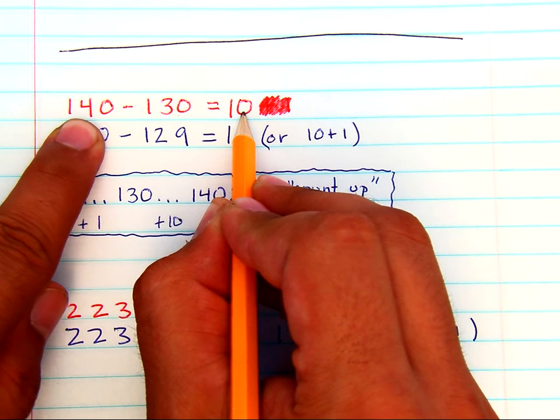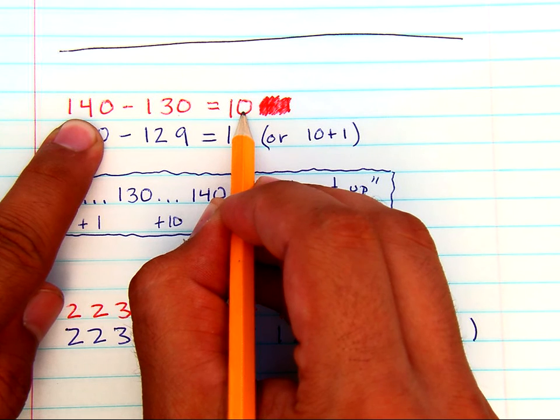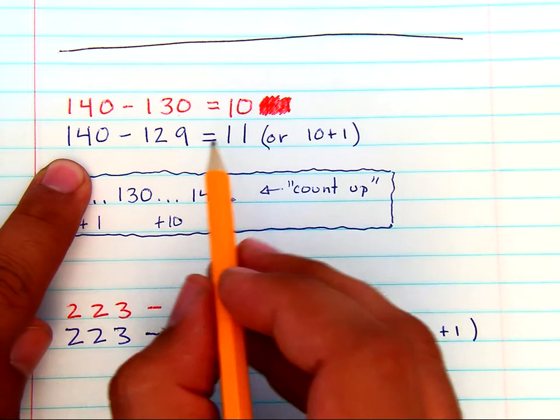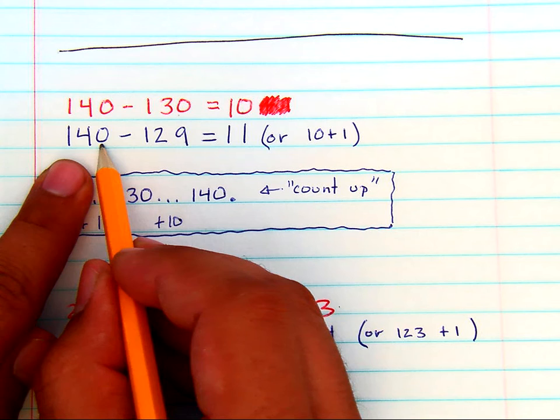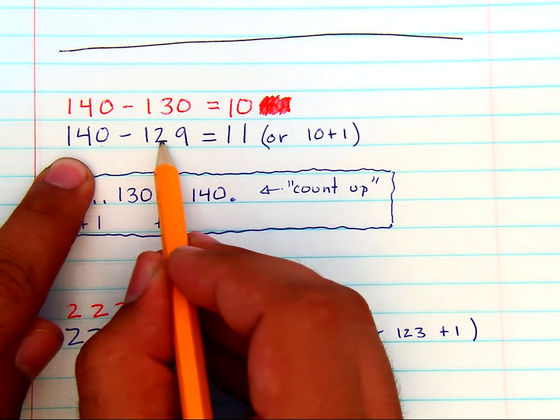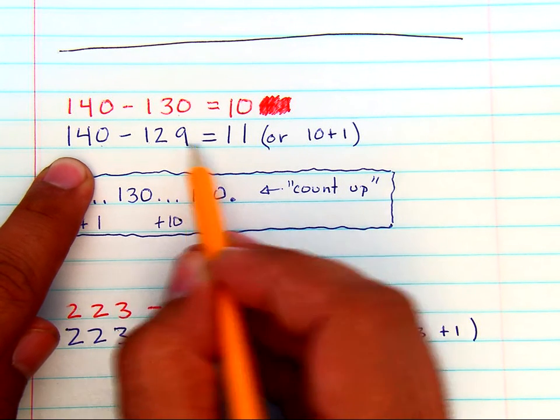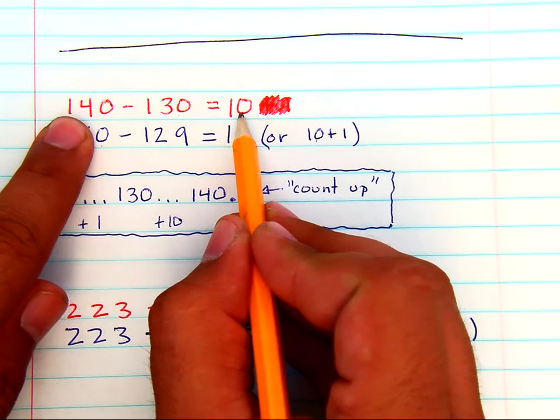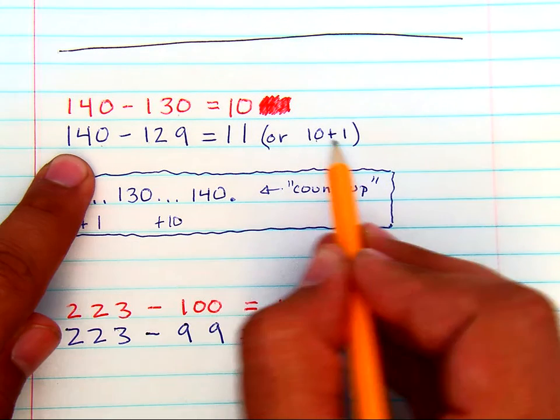Now, take your time with this one. This can become easy if you practice. 140 minus 129 is 10, just like this is, but the difference is one more.